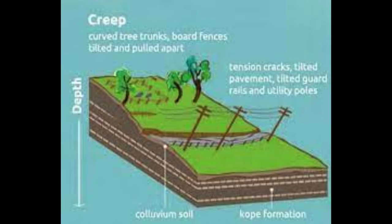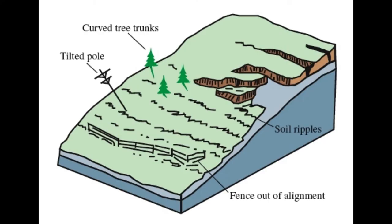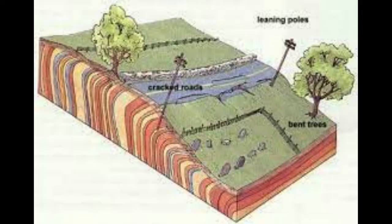This slow movement can be caused by a variety of factors, including changes in soil moisture, slope instability, and seismic activity. Although creep landslides may not pose an immediate threat, they can still cause significant damage over time, particularly to buildings and other structures built on or near the affected slope. They can also disrupt ecosystems and cause environmental damage. To mitigate the potential damage, it is important to monitor and assess areas prone to slope instability and to implement appropriate engineering measures such as slope stabilization and drainage systems.